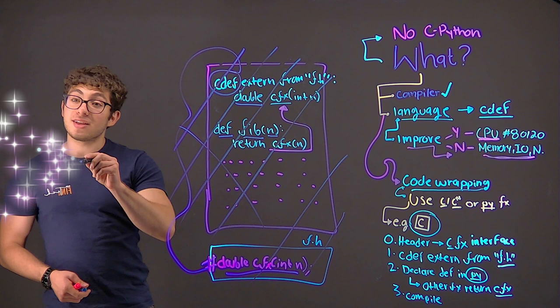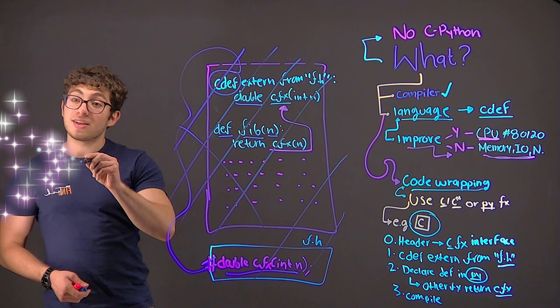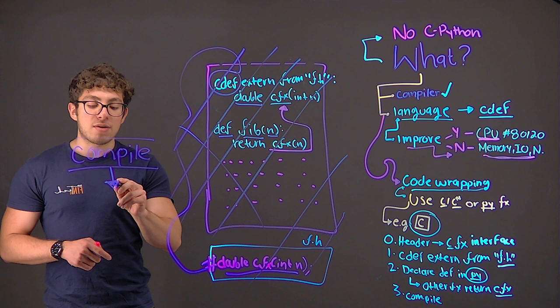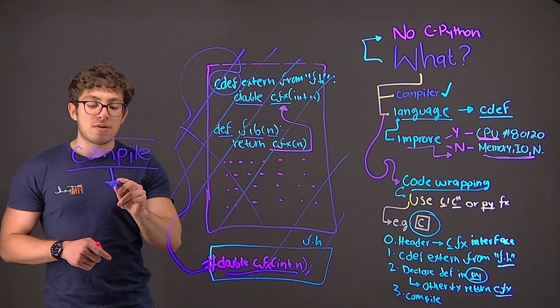After all of this code has been created, the last step we have to do is... Yeah, you got it. We have to compile. If you didn't know, Python does not require for you to specifically compile your code, but Scython does. And you compile your code and you finally get a boost on efficiency, on performance.